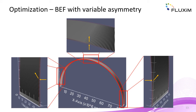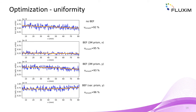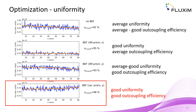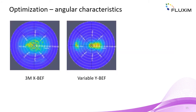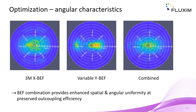In order to improve the directional outcoupling of light towards the top screen, an optimized brightness enhancement film with position-dependent asymmetry in the shape of the triangular prism is designed. As compared to the system without brightness enhancement film, the prism structure always improves the uniformity. However, depending on the orientation of the prism, the outcoupling efficiency might actually be hampered by the presence of the texture. Only for the custom-designed brightness enhancement film with asymmetric prisms are both uniformity and outcoupling efficiency enhanced. Combination of the brightness enhancement film with transverse axis and variable prism symmetry with the regular brightness enhancement film results in an even better angular uniformity than for the regular BEF alone, without hampering the light outcoupling efficiency.